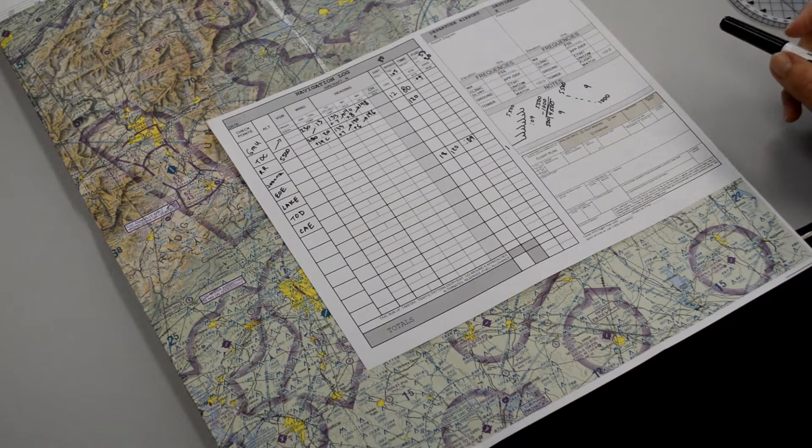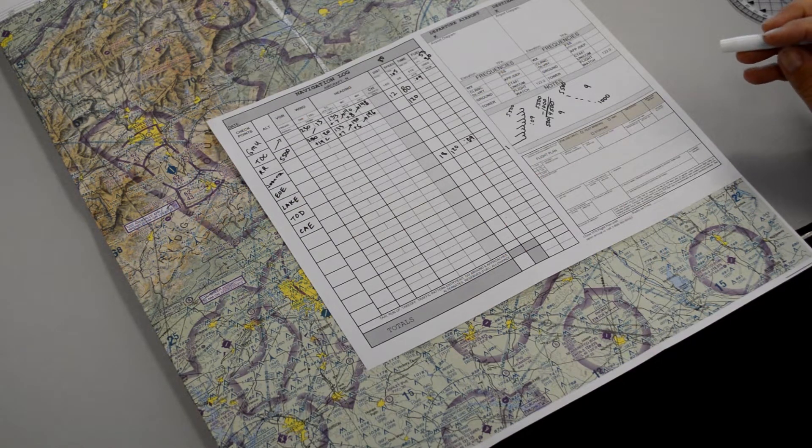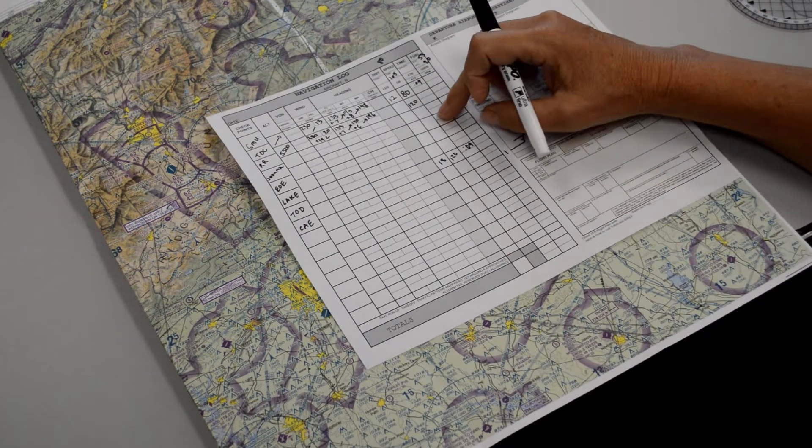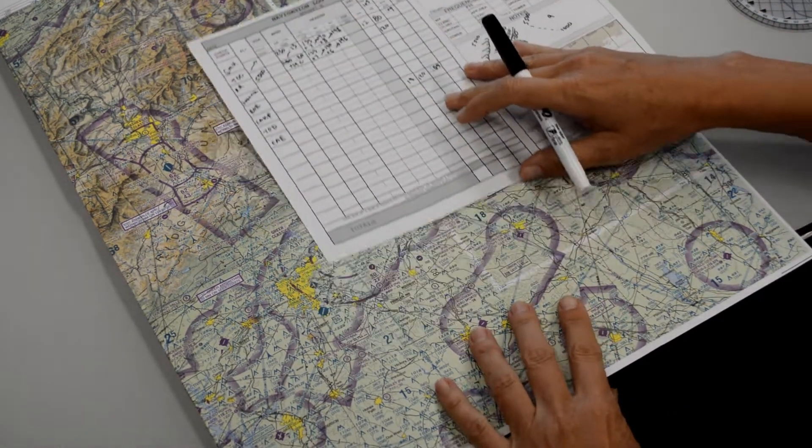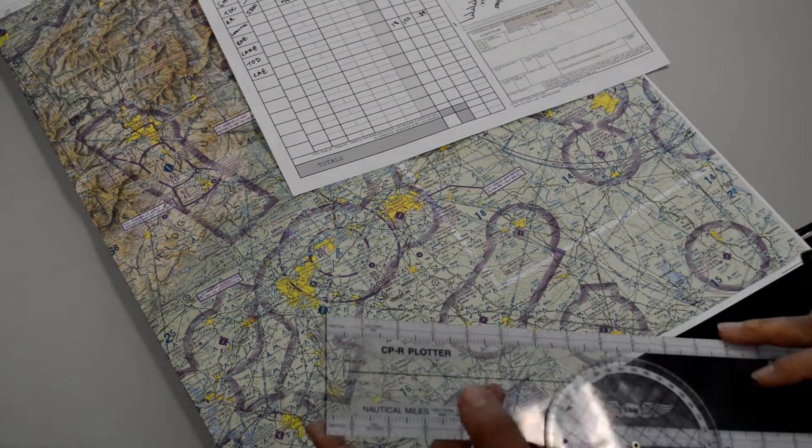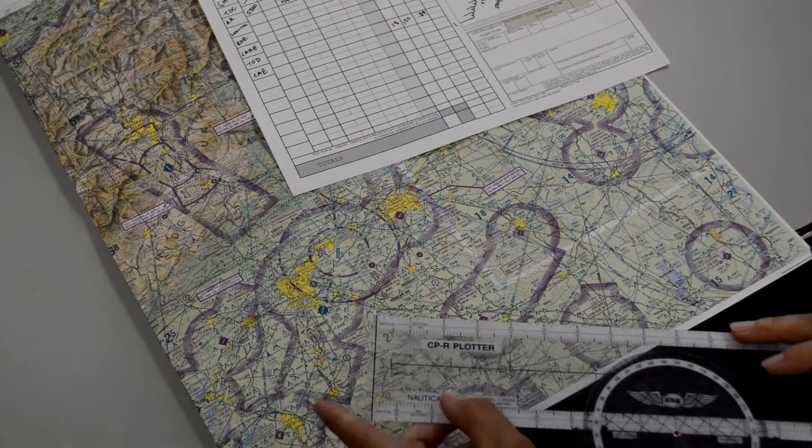Number 16 on our cross-country flight plan asks us to measure all the distances and write those in on the navigation log. We're going to take our plotter and make sure we're on the nautical scale.